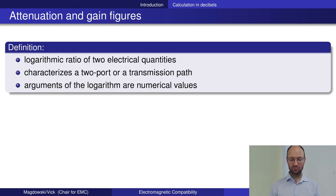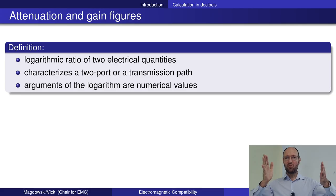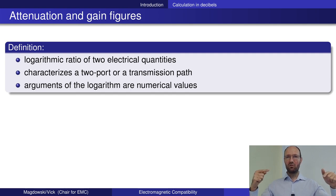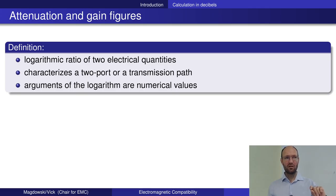So what is dB? There are two things to understand. The first is: take something like an amplifier, a filter, or some system with an input and an output. You measure the power at the input and the power at the output, take the ratio of the two powers, calculate the decadic logarithm of that ratio — which gives you Bell — and since Bell is not very handy, you multiply by 10 to get decibel.